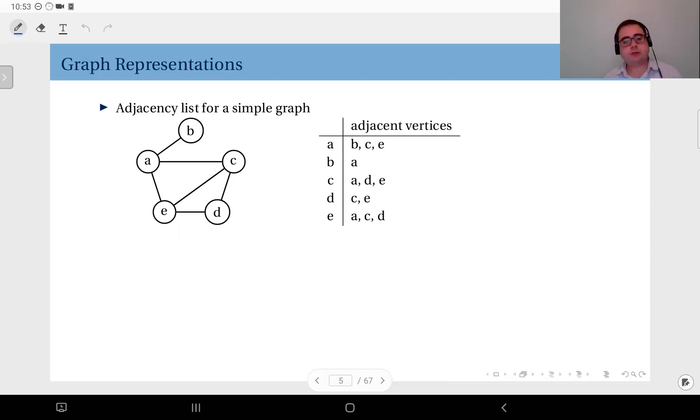The first one is called adjacency list. Here you see an adjacency list for a simple graph. Essentially this is a list where you have the vertices listed on the row headings, and depending on your implementation it could be a different type of structure, but the idea is the same: on the row headings you have the vertices and associated with each vertex you have a list.